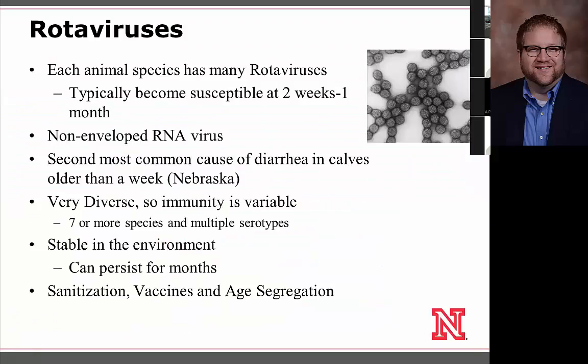When we think about viruses that are pathogenic to animals, the most simple one is called a rotavirus. Each animal species has many types of rotaviruses. These are non-enveloped RNA viruses, meaning they don't have an envelope on their surface — it's mainly protein. Animals typically become susceptible at about two weeks of age, and their susceptibility wanes as their immune system matures. Here in Nebraska, this is the second most common cause of diarrhea in cattle older than a week.